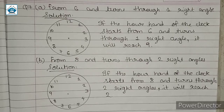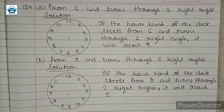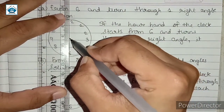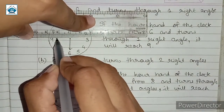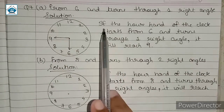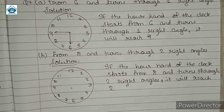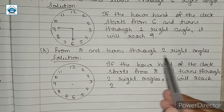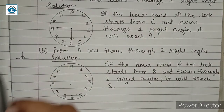Where will the hour hand stop if it starts from 6 and turns through one right angle? We start from 6 and cover 3 parts, making one right angle. Then it reaches 9. So if the hand of the clock starts from 6 and turns through one right angle it will reach 9. Similarly, for the next sub-question: if it starts from 8 and turns through 2 right angles — 2 right angles means one straight line.